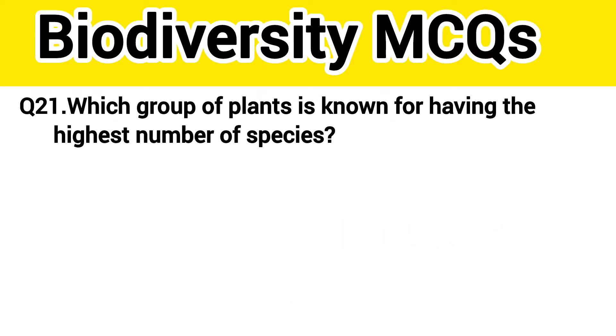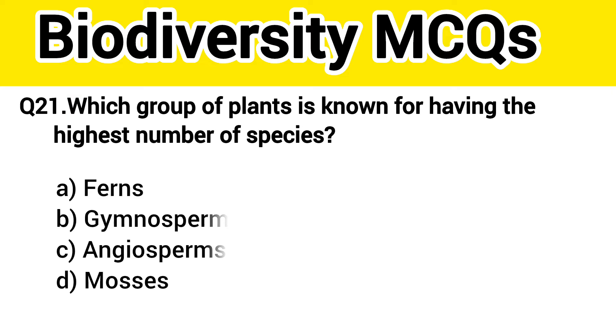Question number 22. Which group of plants is known for having the highest number of species? The right answer, option C: Angiosperms.